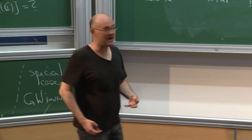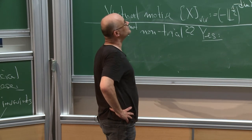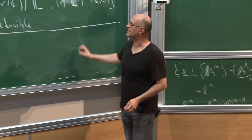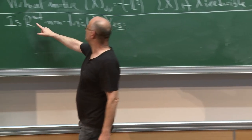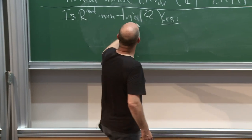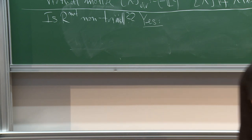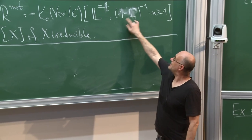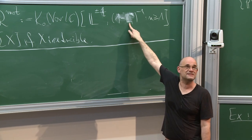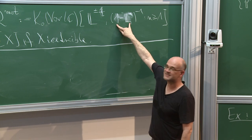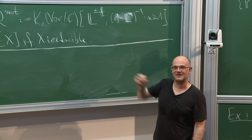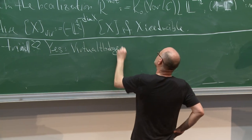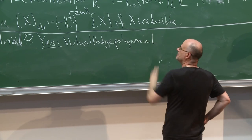The classes in the Grothendieck ring of varieties are the universal motivic invariants. To prove the motivic ring is non-trivial, we exhibit an interesting motivic invariant. The Euler characteristic doesn't work because it sends L to 1, making (1 - L^n) go to zero. So we need the virtual Hodge polynomial.